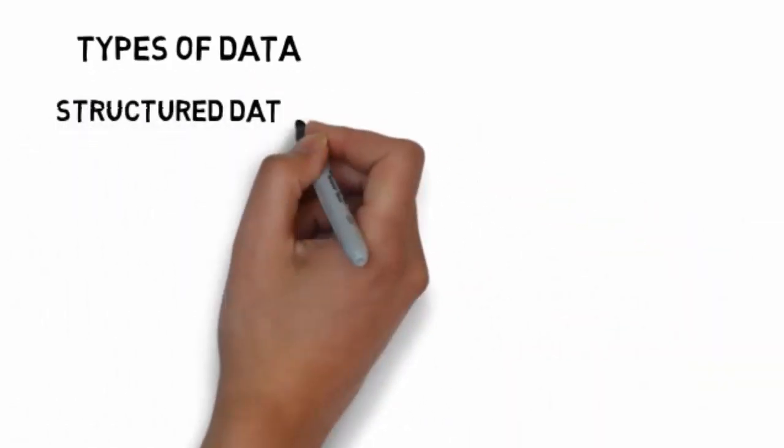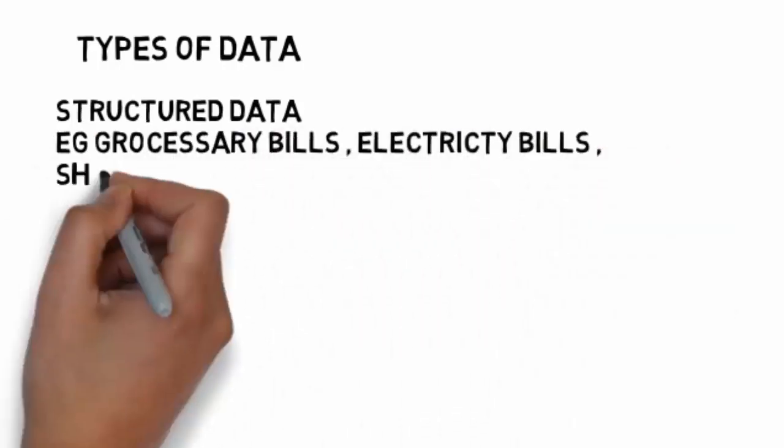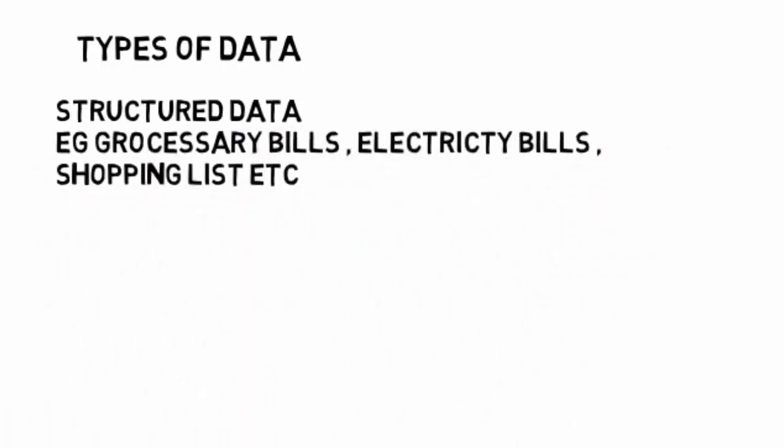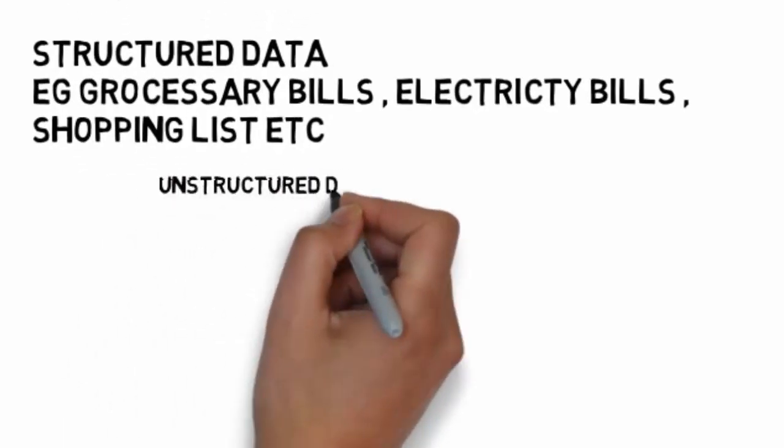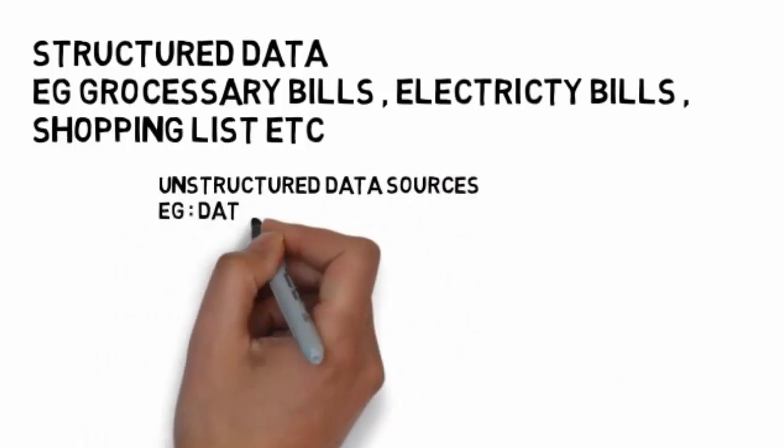The types of big data classified as structured data. Structured data examples include grocery bills, electricity bills, shopping lists, etc. These are in a very structured form and it's very easy for humans or computers to understand and do calculations on this data. Simple programs can be written to analyze and calculate these data. Such kind of data like electricity bills come under structured data.